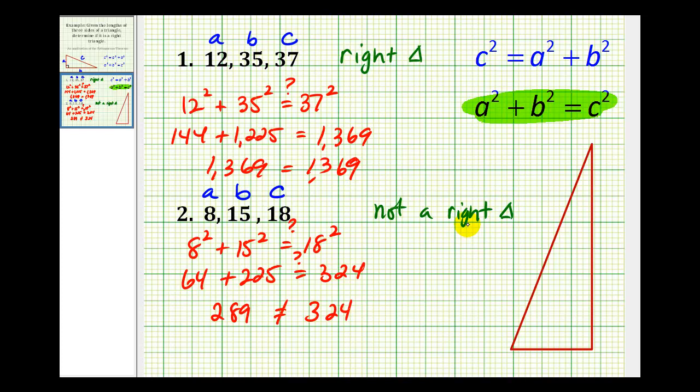And this question doesn't ask, but since C squared was 324, and A squared plus B squared was equal to 289, we could say that C squared is greater than A squared plus B squared, which means we would have an obtuse triangle, where one of the angles would be between 90 and 180 degrees.